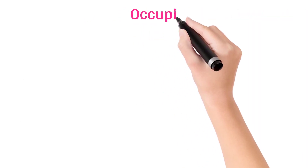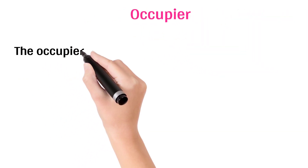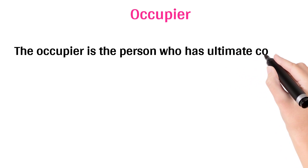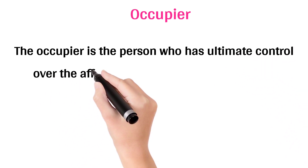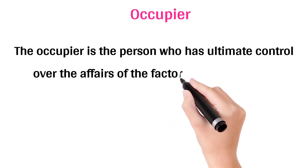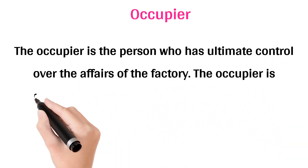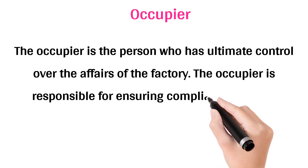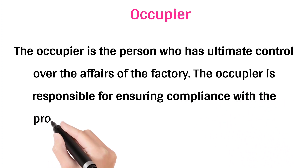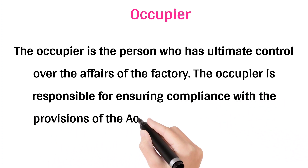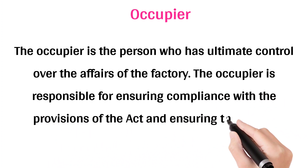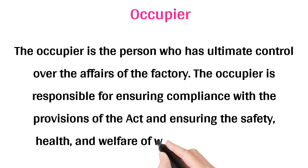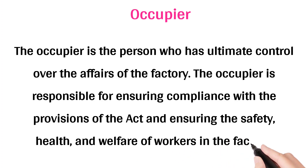Occupier: The occupier is the person who has ultimate control over the affairs of the factory. The occupier is responsible for ensuring compliance with the provisions of the Act and ensuring the safety, health, and welfare of workers in the factory.